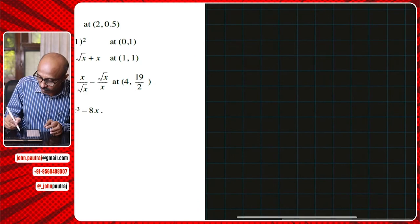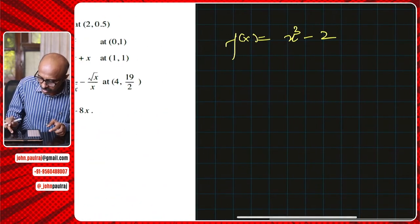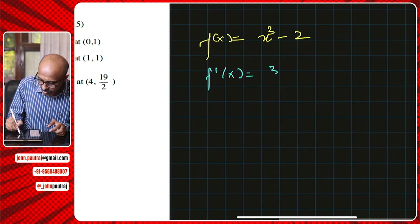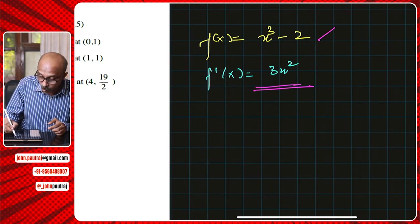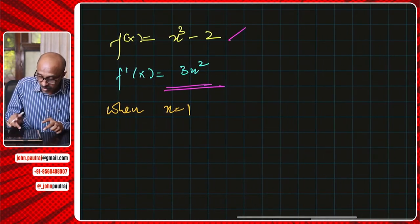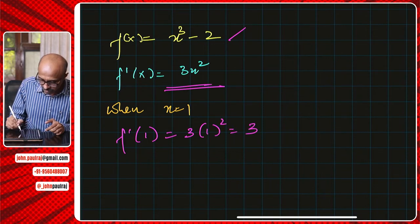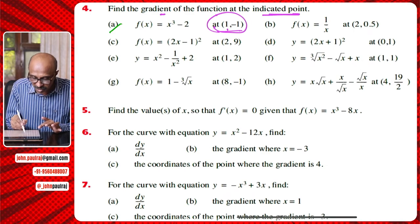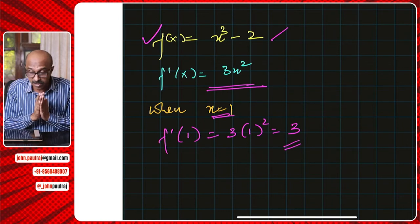I'll show it algebraically first. If f(x) = x³ - 2, the power rule tells us the derivative is 3x². That 3x² is the general expression for the slope of the tangent at any point. When x = 1 — meaning the point (1, -1) — f'(1) = 3 × 1² = 3. We substitute x = 1 because we're looking for the gradient at the point (1, -1). But we're interested in finding how to do this using the TI-Nspire CX2.